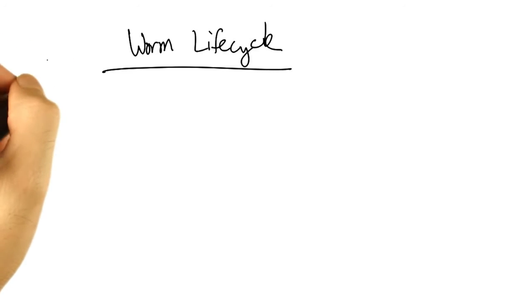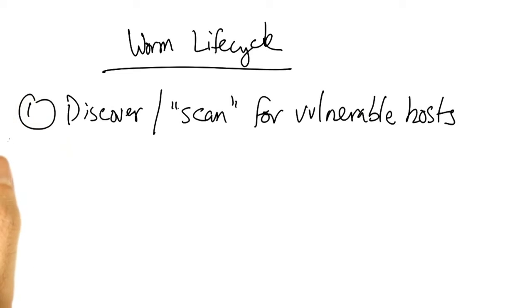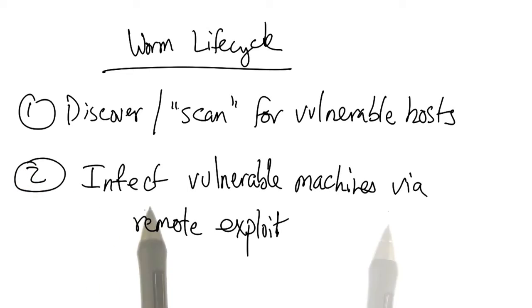A worm's spread on the internet has the following life cycle. First, the infected machine might scan other machines on the internet to discover vulnerable hosts, and subsequently infect the vulnerable machines that it discovers via remote exploit.